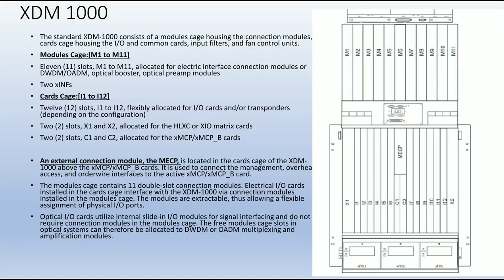Today we are going to discuss the ECI XGM-100 self-view. The standard XGM-100 consists of a module cage housing, the connection module, card cage housing, the input, output and common cards, input filters, and fan control units.